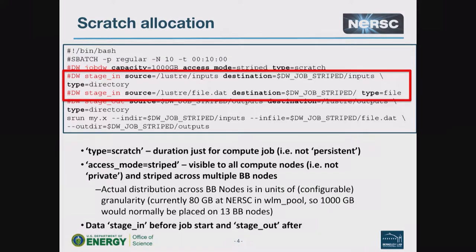You can stage in your files — a file or a directory. Note that you have to specify the type, so you have to specify staging type of directory or type equals file. You have to specify where it's coming from and where it's going to. Note that since you've requested a scratch allocation, the access variable is pound DW job striped, not pound DW job scratch, which I think would be more logical, but it's pound DW job striped.